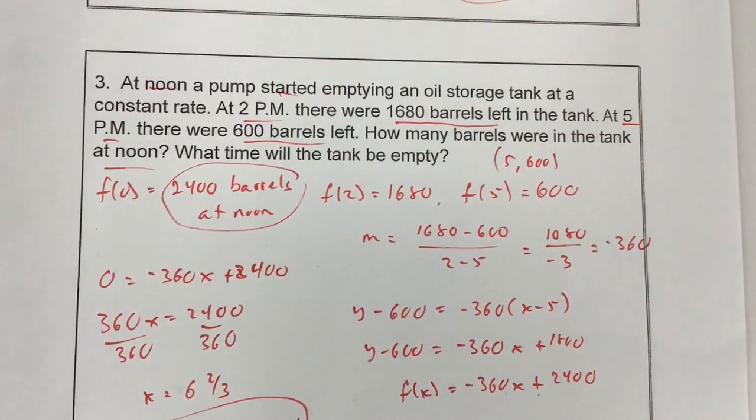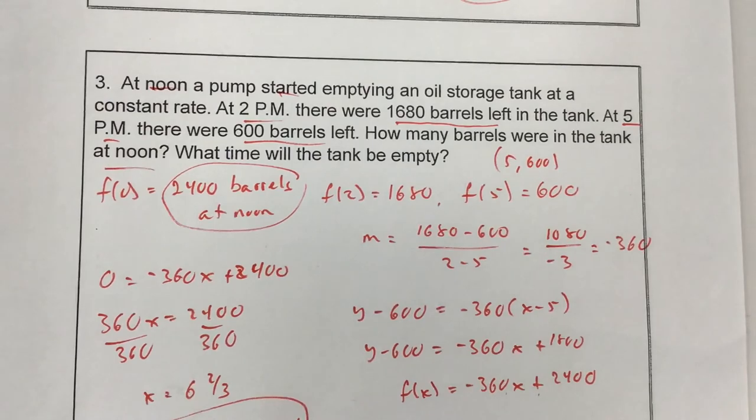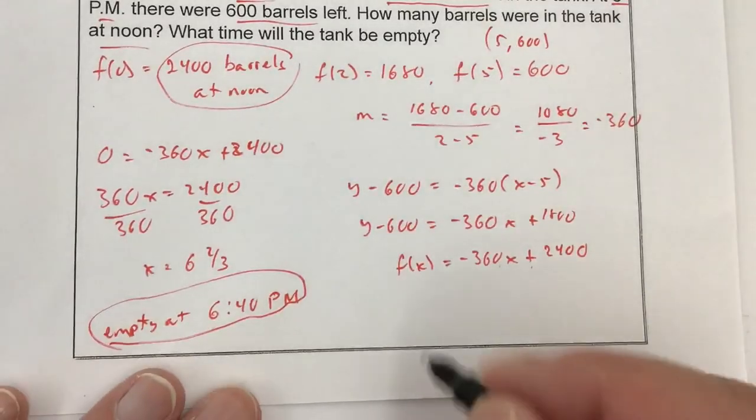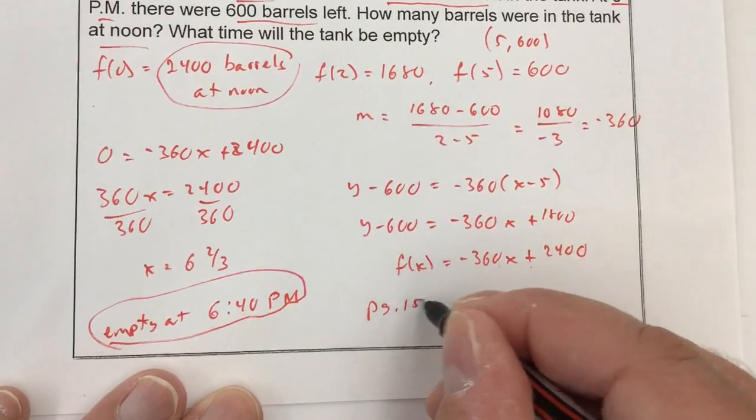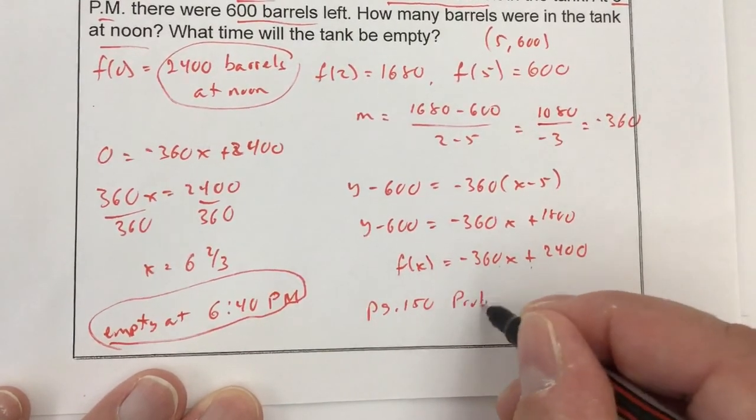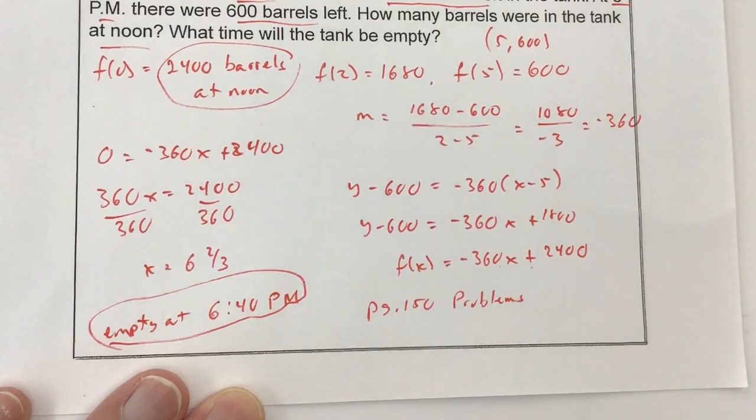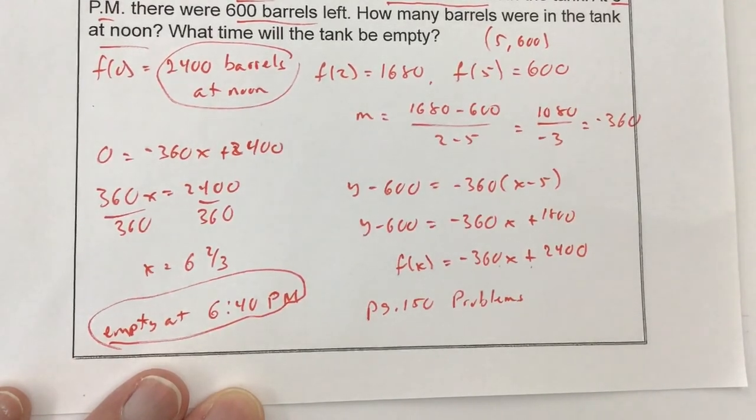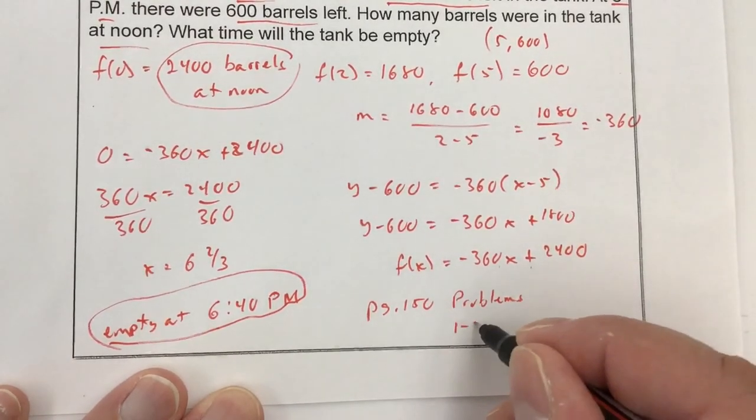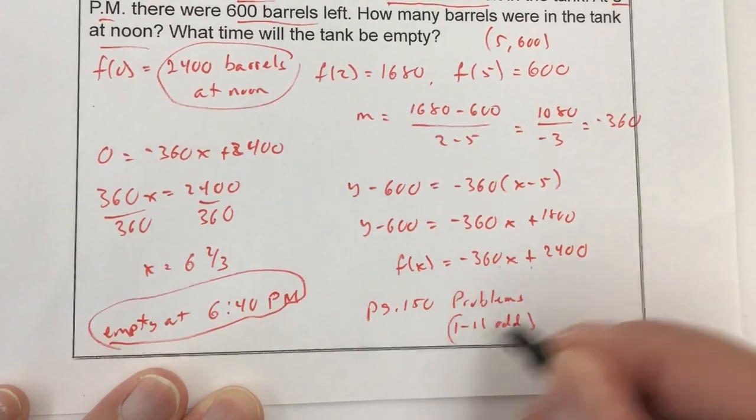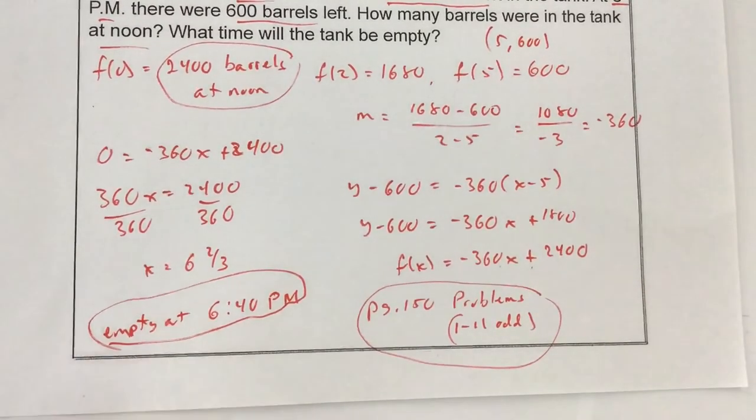So those are a few examples. I am going to ask you to do a little more work on that. On page 150 is where your assignment starts. These are the word problems. And I'm asking you to do 1 through 11, the odd.